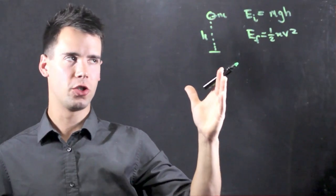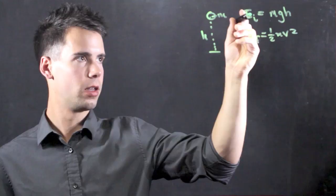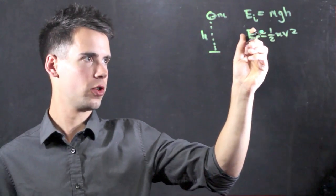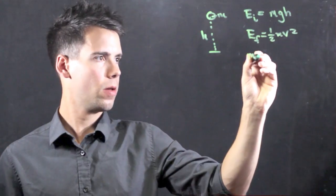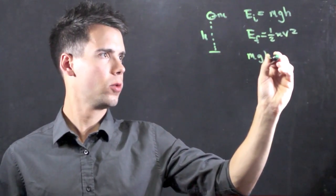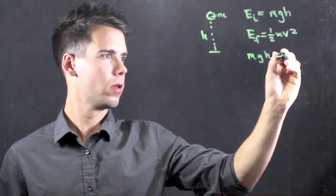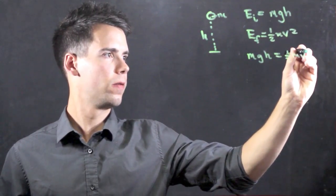Now, using the conservation of energy, we can say that energy is not created or destroyed. We can set the initial energy equal to the final energy, and we find that mgh is equal to one-half mv squared.